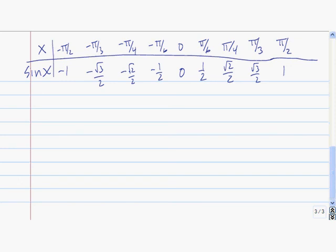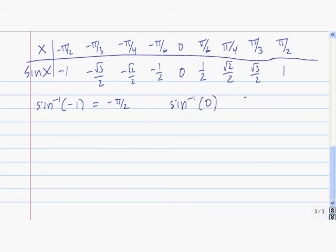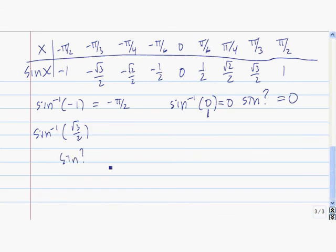Let's see how the arc sine function works. The outputs of the sine are the inputs of the inverse. So if I want to evaluate the inverse sine of negative 1, I'm looking for which angle in the restricted domain has a sine value of negative 1, and that's negative pi over 2. If I want to evaluate the inverse sine of 0, I'm asking: the sine of what equals 0? And that's 0. The inverse sine of square root of 3 over 2 asks: the sine of what is equal to root 3 over 2? And the answer is pi over 3.